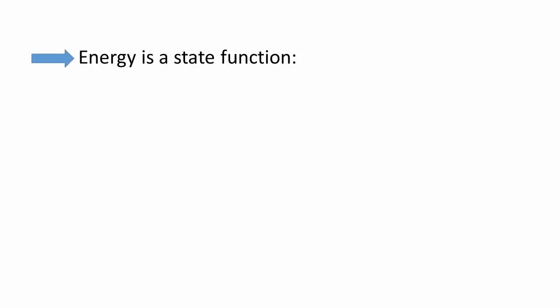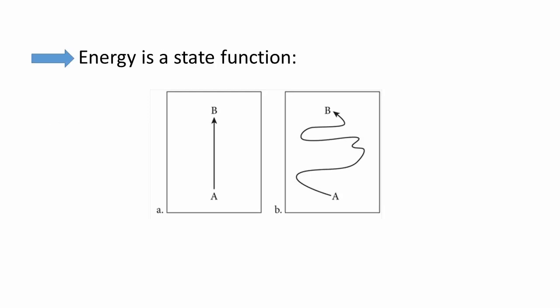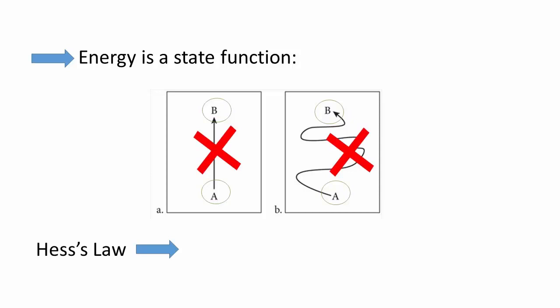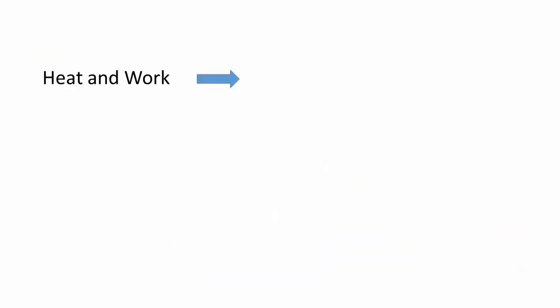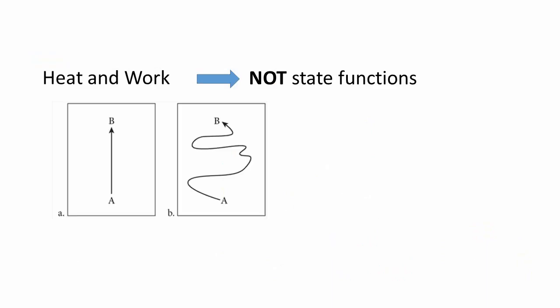Energy is a state function. What this means is that it only matters where you start and where you finish. We already saw this concept in action when we used Hess's law — all we really cared about is having the right starting reactions, and once all the chemical reactions were added up, we had the right final products. Are heat and work state functions? It turns out that the path we take to get from start to finish will have a profound effect on the values of Q and W.